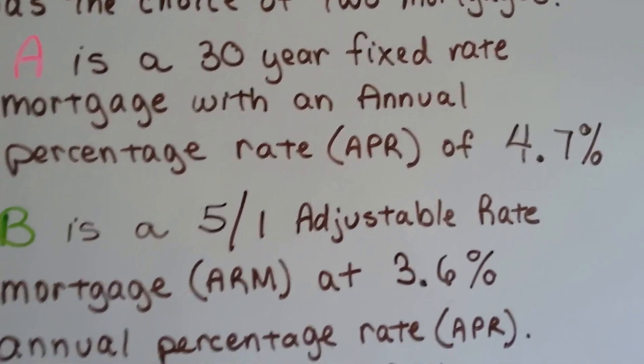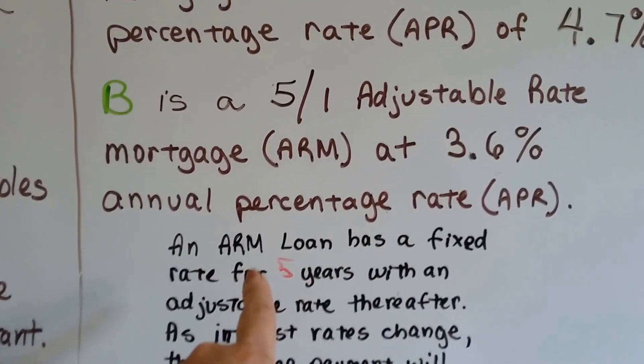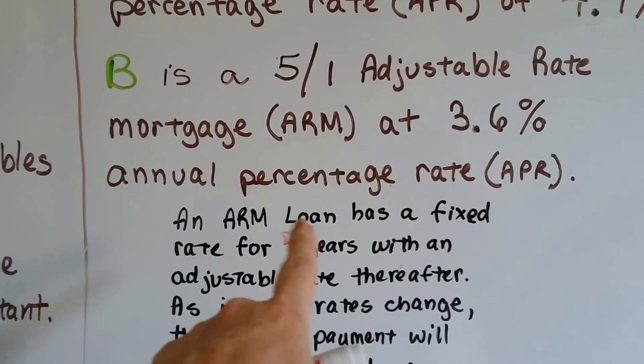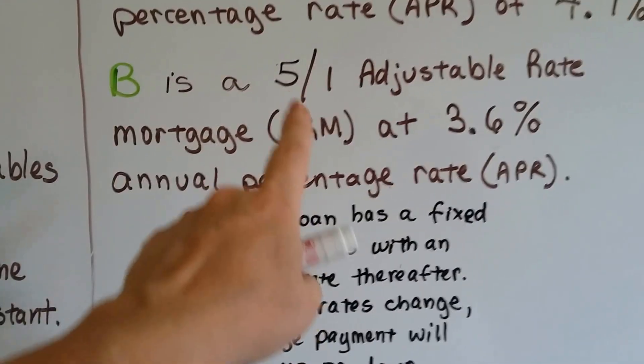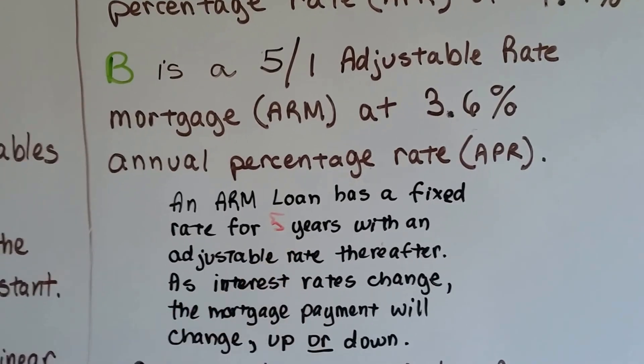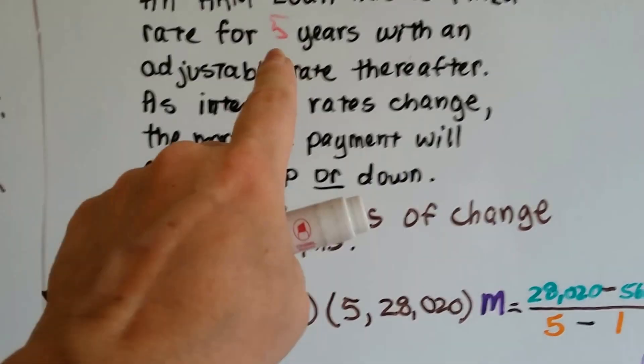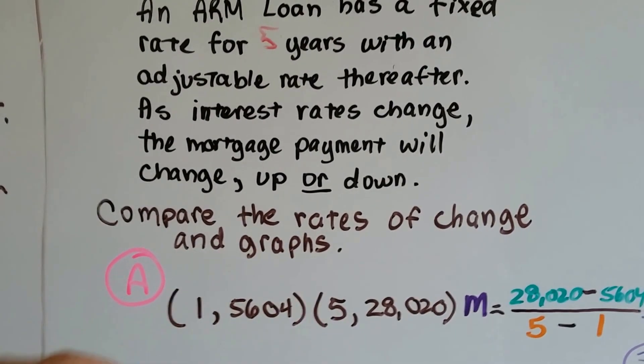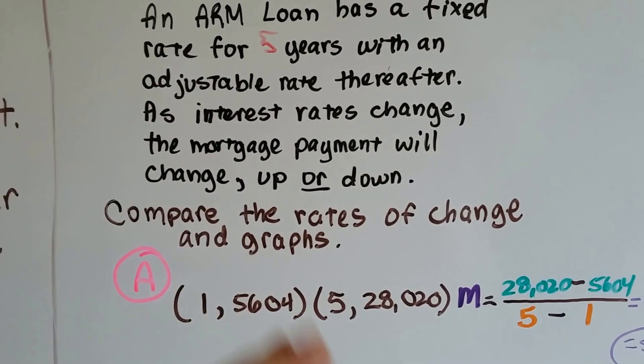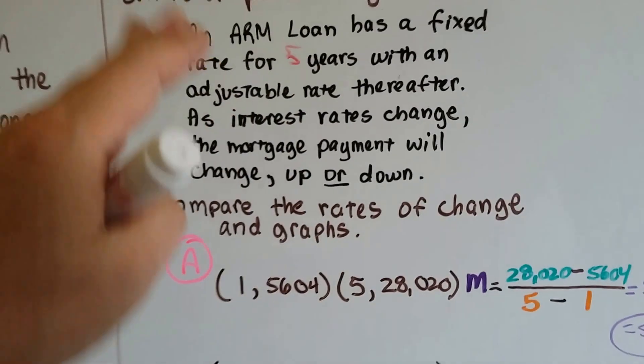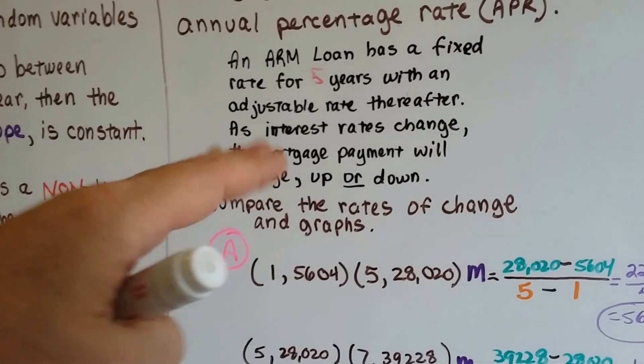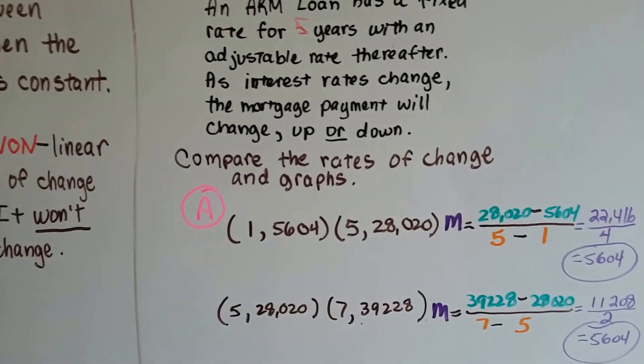Now, an ARM is a loan, an adjustable rate mortgage loan that has a fixed rate for five years. It could be seven years, and this adjustable rate after that amount of years is going to change, and it'll go up and down each year. It could change up or down, keep going up for years, or go down one year and up three years. It's adjustable. It keeps changing.